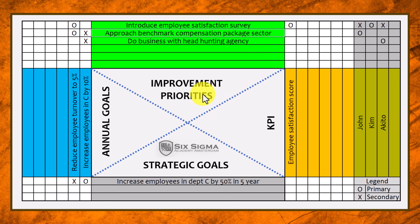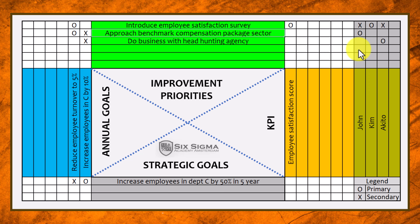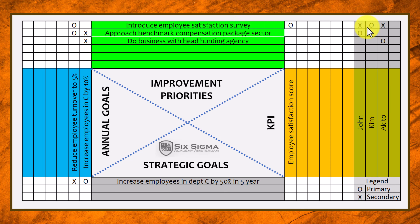This matrix is not just a nice list, but also a warning of important factors missing. Subsequently, per improvement effort, we write down who is responsible. For example, John, Kim, and Akito are three employees. John is the primary responsible person for one improvement priority but secondary responsible for another, because the primary responsible person for that one is Kim.